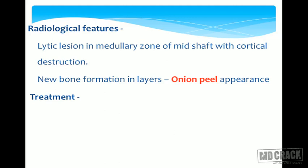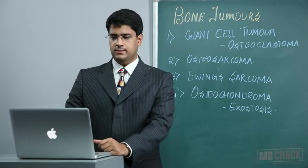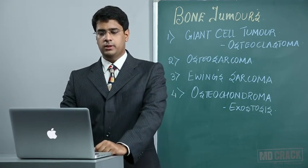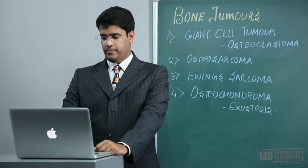Radiological features of Ewing sarcoma: it is a lytic lesion in the medullary zone of the mid-shaft with cortical destruction. New bone formation occurs in layers around the lesion, giving the classical onion peel appearance. This can definitely come as an MCQ — the onion peel appearance is classical for Ewing sarcoma.